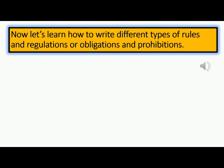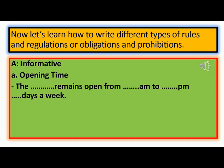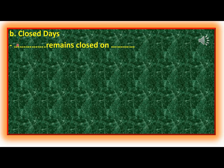Now let's learn how to write different types of rules and regulations. Type A — Informative. Sub-type (a) is about opening time. Structure: 'The [place] remains open from [time] a.m. to [time] p.m., [X] days a week.' Example: 'The library remains open from 9 a.m. to 9 p.m., six days a week.' Sub-type (b) is about closed days. Structure: '[Place] remains closed on [day].' Example: 'The zoo remains closed on Tuesdays.'